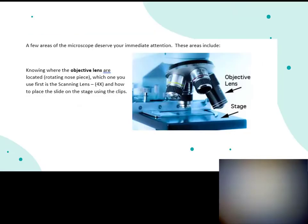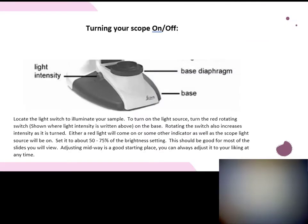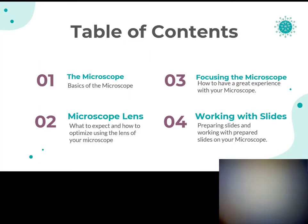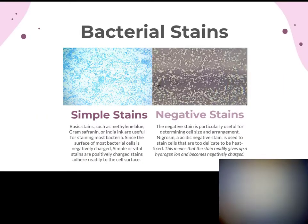So we've gone over the stage, the objective lenses, and how to calculate the final or total magnification. We know the 4x is the scanning lens because we scan around initially to see what we want to zoom in on. We adjust the light source at the base, and the ocular magnification of 10x is written right on there. Now let's talk about bacteria stains.